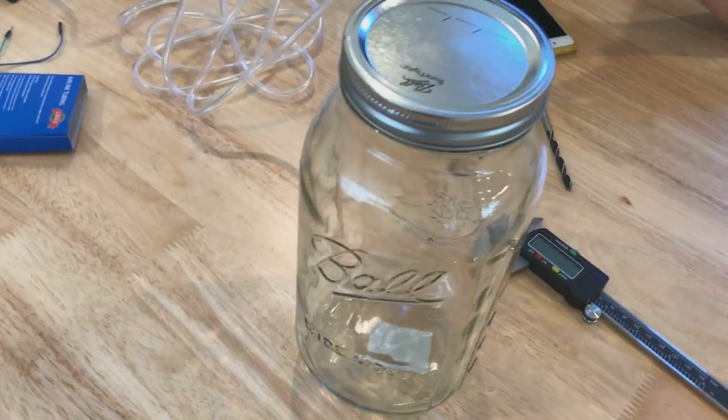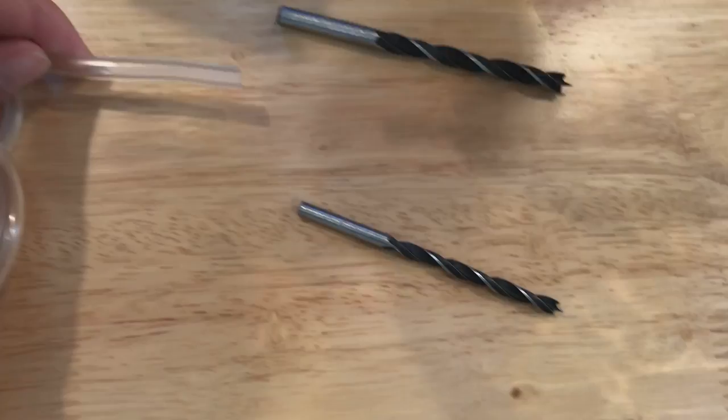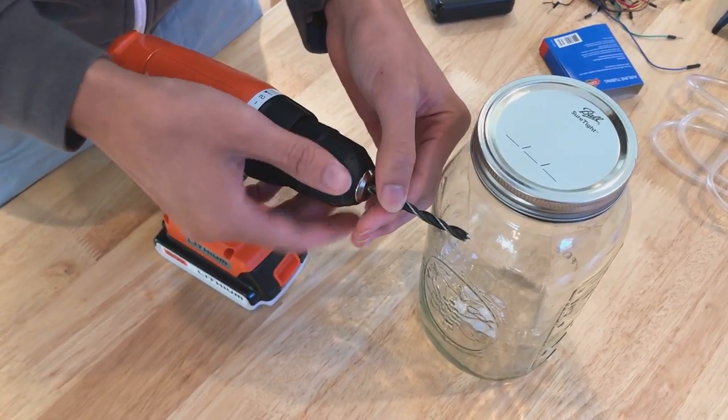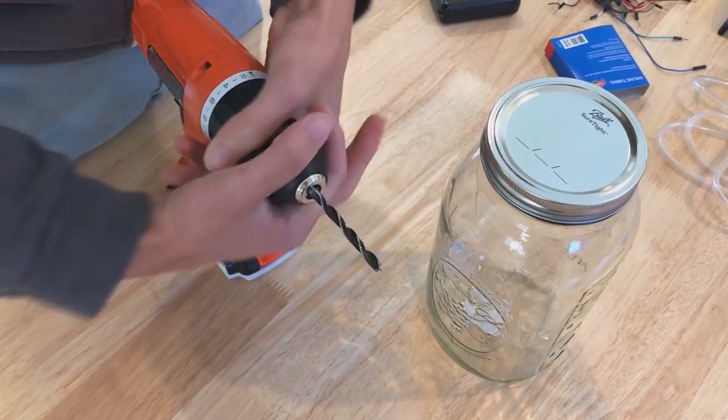This jar was 2 bucks at the hipster grocery. All we have to do is drill a couple holes for the tubing. Our tubing seems to be 6mm in diameter. And I think this is a 7 over 32 inch jobbit.